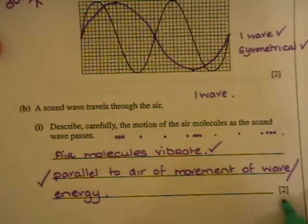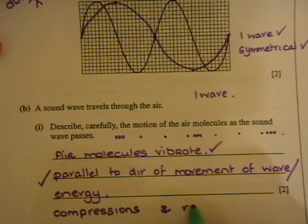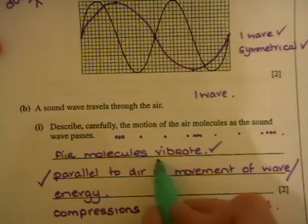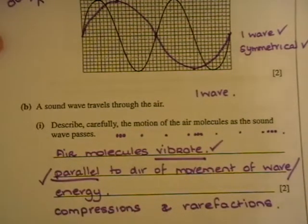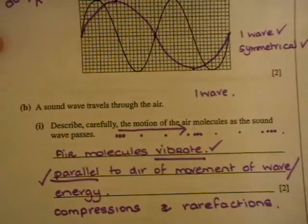If there would happen to be three marks there, I would also put in there something about in a series of compressions. And you could describe about the air molecules being closer together there, and rarefactions where the air molecules are more spread out. But really what they're looking for there is the idea of vibration, and this idea of the fact that they vibrate parallel to the direction that the energy or the wave is moving in.